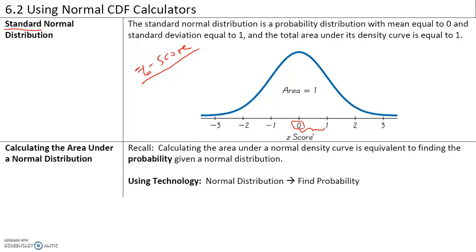We will use sacstats.weavely.com. Click on normal distribution, then click on find probability to find the probability of different values.